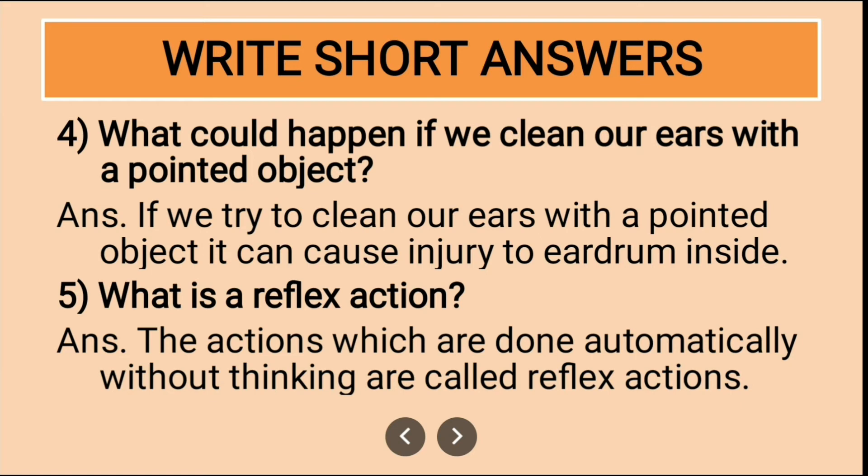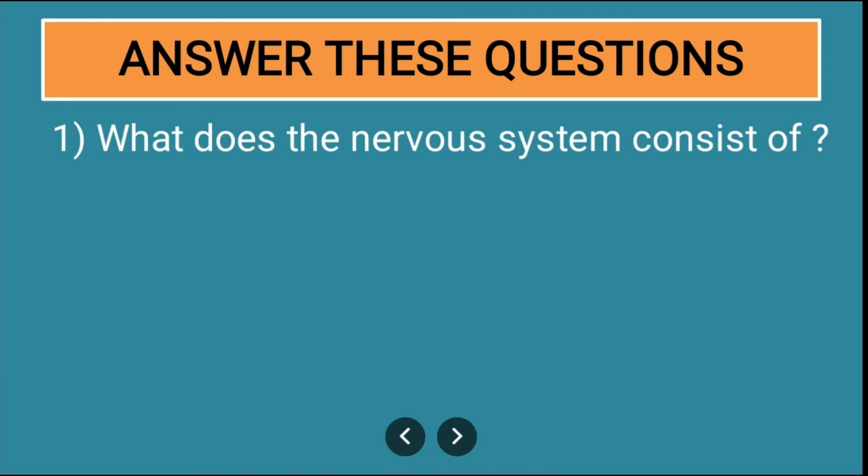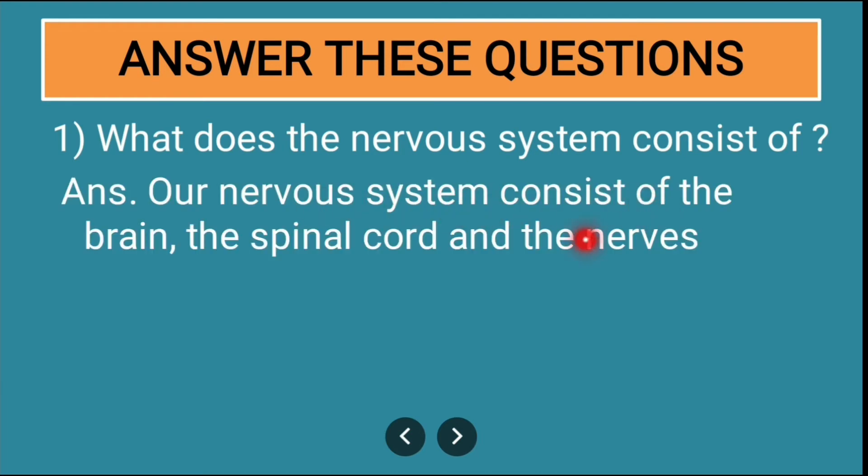Then comes the long answer questions. First question: what does the nervous system consist of? Our nervous system consists of brain, spinal cord, and nerves.